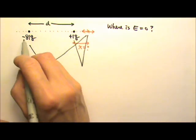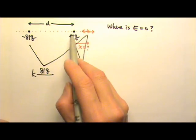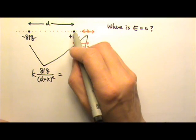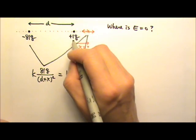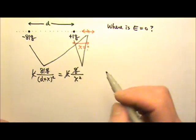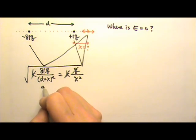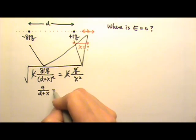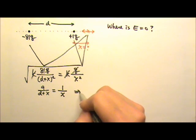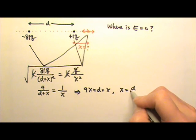So we need the field produced by the negative 81q at the outside location to equal the field produced by the positive 1q there. The field from 81q is k times 81q divided by (d plus x) squared, and the field from 1q is k times 1q divided by x squared. The k's and q's cancel. Taking the square root gives 9 divided by (d plus x) equals 1 divided by x. Cross multiplying: 9x equals d plus x, so x equals one-eighth d.